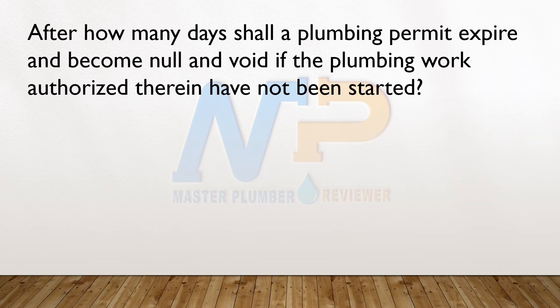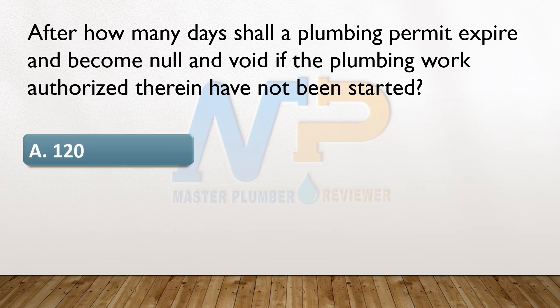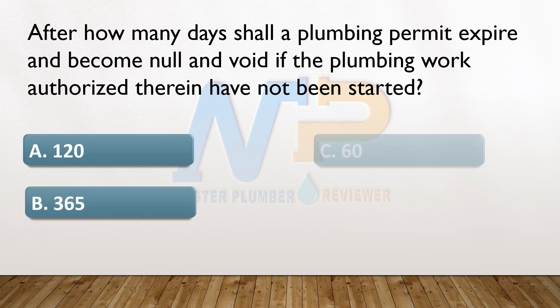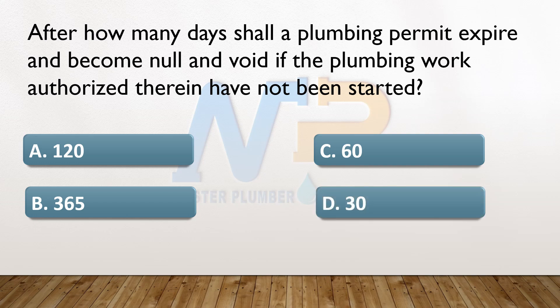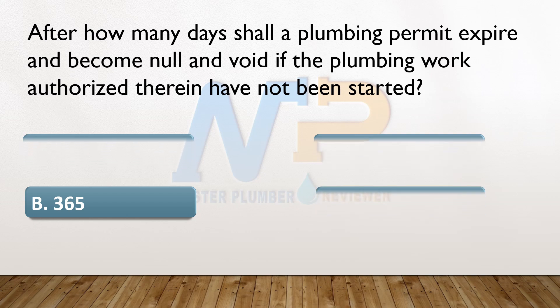After how many days shall a plumbing permit expire and become null and void if the plumbing work authorized therein have not been started? A. 120. B. 365. C. 60. D. 30. The answer: D. 30.